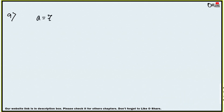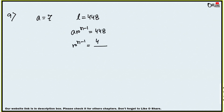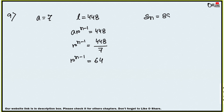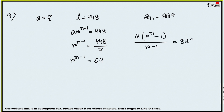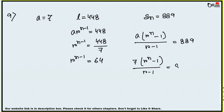Sum number 9: in a GP, the first term a = 7, last term l = 448, and sum Sn = 889. Using l = a·rⁿ⁻¹: 7·rⁿ⁻¹ = 448, so rⁿ⁻¹ = 64. Using Sn = a(rⁿ − 1)/(r − 1): 7(rⁿ − 1)/(r − 1) = 889, so (rⁿ − 1)/(r − 1) = 127.